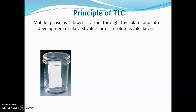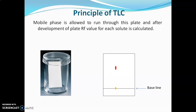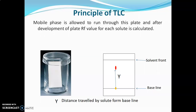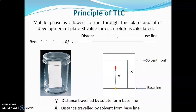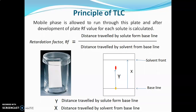After visualization, the plate may look like this. Suppose this is the TLC plate with a baseline where the sample is spotted. The sample travels some distance and the solvent travels some distance on the plate. The distance traveled by the solvent is known as the solvent front. Here, y is the distance traveled by solute from the baseline and x is the distance traveled by solvent from the baseline. Using these two distances, the RF value is calculated. The formula for RF value — that is retardation factor — is: distance traveled by solute from baseline divided by distance traveled by solvent from baseline. RF value is the most important factor in identification of sample.